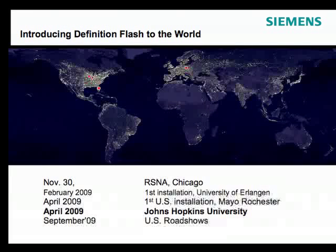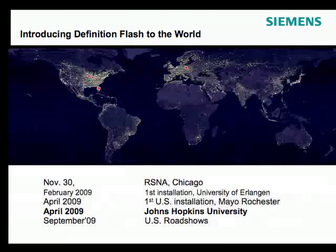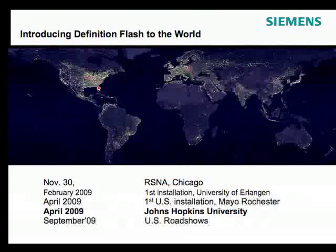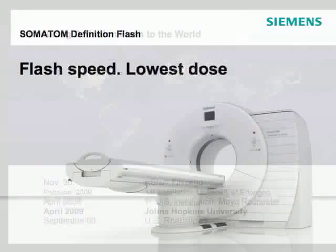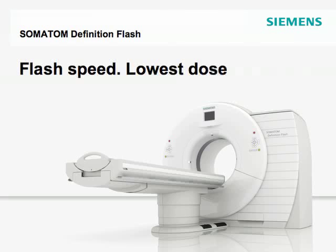The first public discussion of this technology was at RSNA. Installation has been underway over the past four to five weeks at Erlangen, with Mayo Rochester and Johns Hopkins University receiving the scanner in April. Further installations will continue through the summer, with broader availability expected by September. The Somatom Definition Flash: flash speed at the lowest dose.